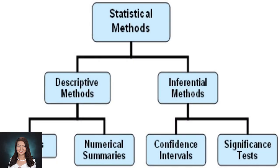Let's take a look at this flowchart. We have here the statistical methods for descriptive methods and inferential methods. In the descriptive methods, we use graphs and numerical summaries. While in inferential methods, we use confidence intervals and the significance test.